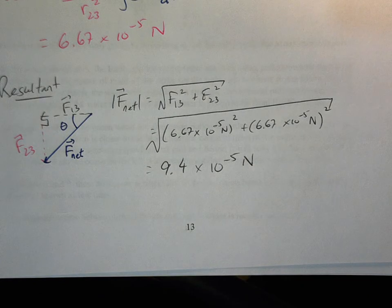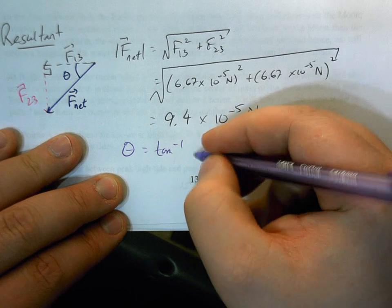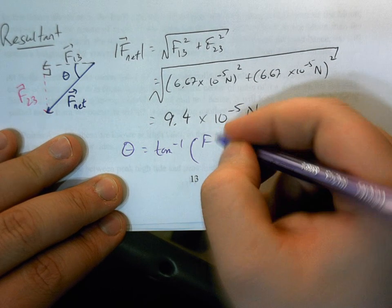But in case you don't buy that, we can certainly just show you the angle. So we get tangent inverse of, well, F2,3 is going to act as my opposite.